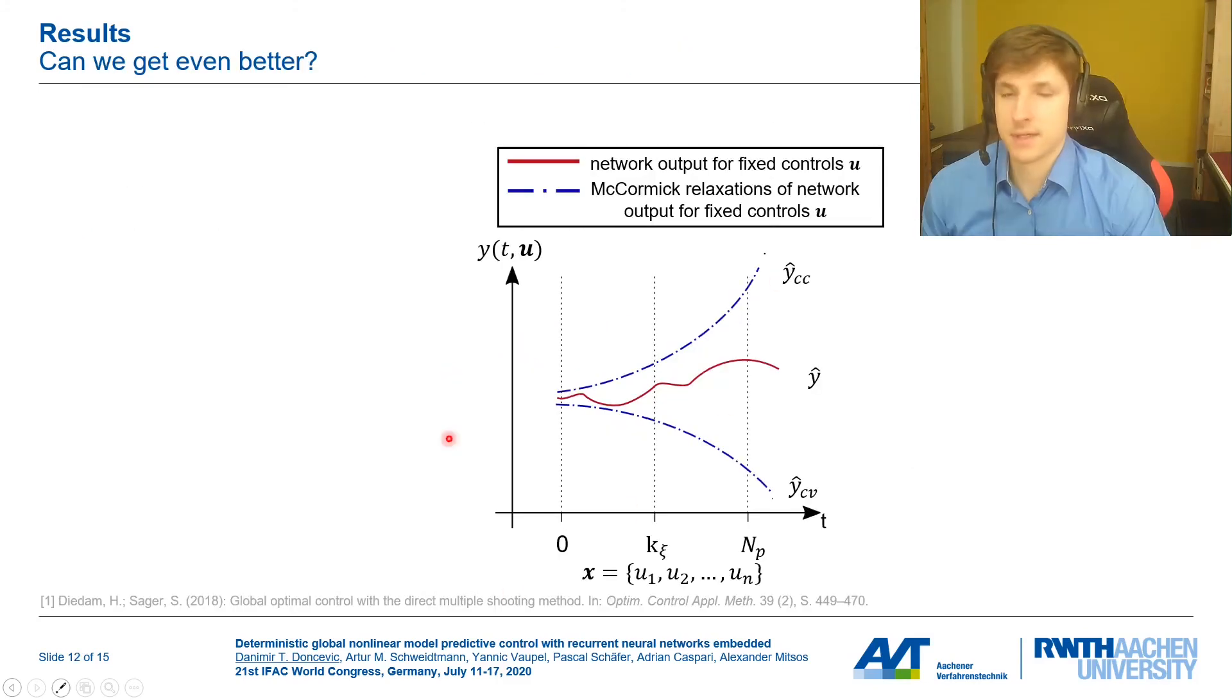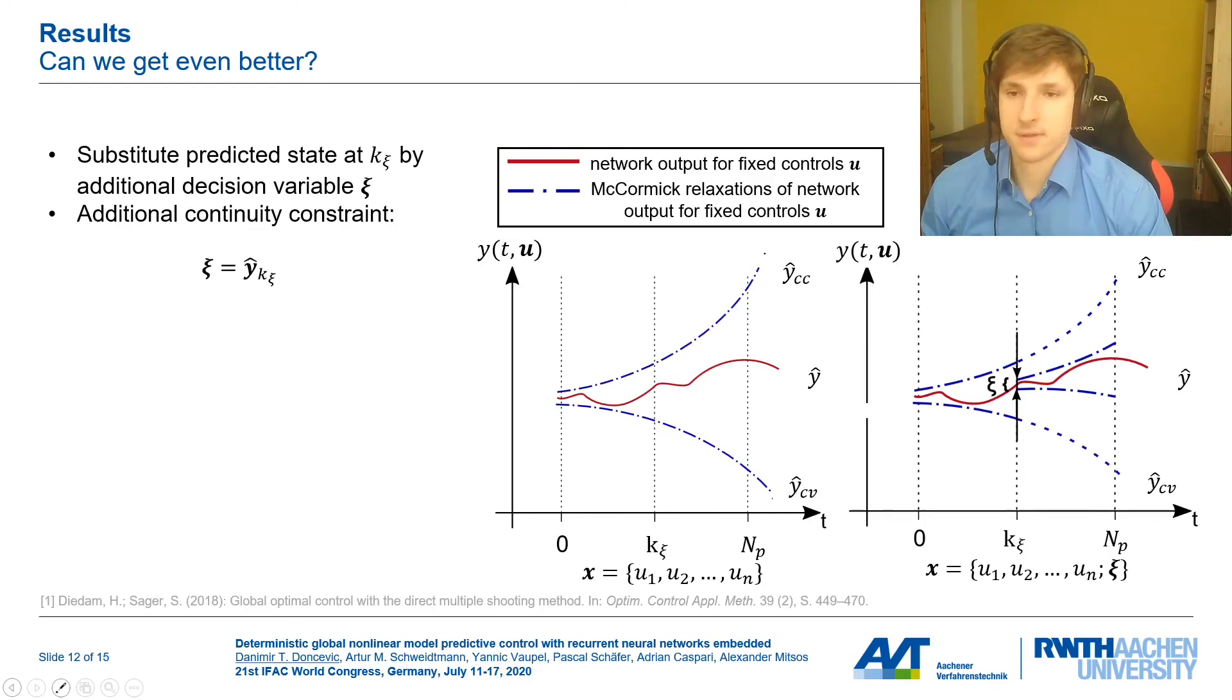Take this sketch as a conceptual sketch. The red line shows you the output sequence for a fixed set of controls U and these blue lines show you the corresponding McCormick relaxations. What you can see is that these relaxations are getting increasingly looser towards the end of the prediction horizon. So the question here is now, is there something we can do about this? And actually we have thought of something. You can add few state variables as decision variables to the optimizer as shown here by this variable which we named xi and it enters the problem at timestep k_xi. What it means is that we also need an additional equality constraint as shown here to enforce continuity at this position. What this variable xi does is that when we branch on xi we reset the relaxations to the current width of the interval of the current branching interval from xi as is shown here. Basically we get tighter relaxations at this point which also leads to tighter relaxations towards the end of the prediction horizon.